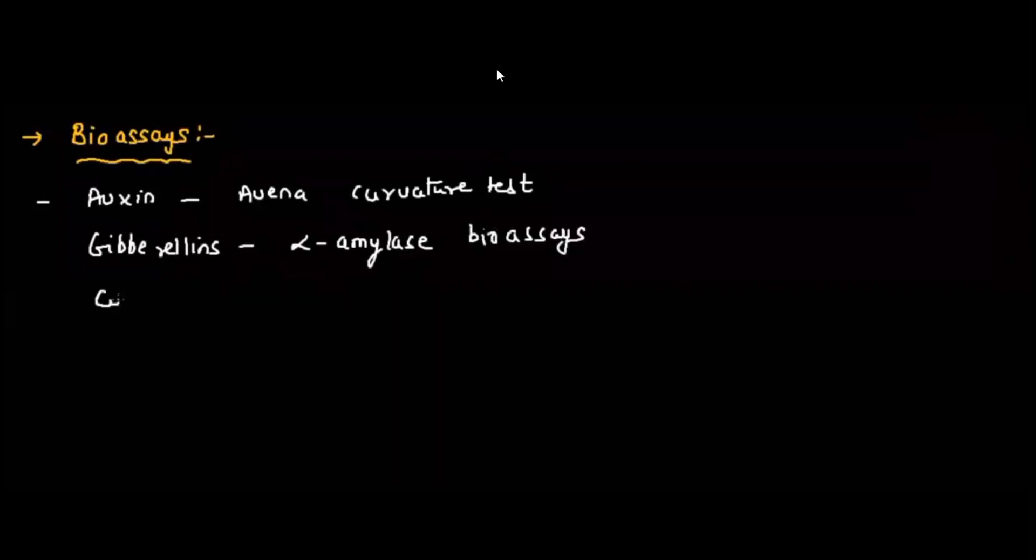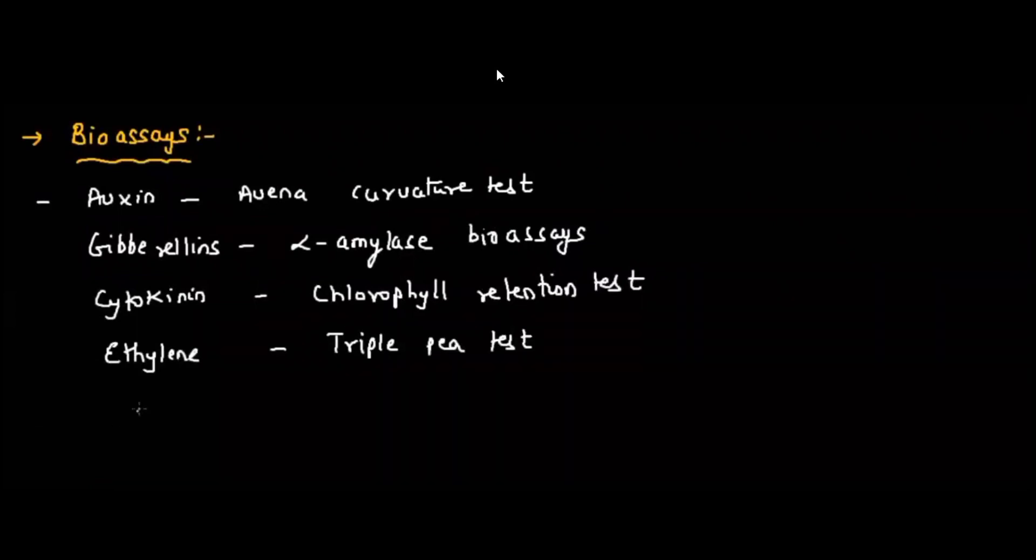The bioassay techniques: to understand auxin we study by avena curvature test, gibberellins we study by alpha amylase bioassay test, cytokinin is studied by the help of chlorophyll retention test, ethylene is studied by the help of triple response test, and abscisic acid is done by inhibition test.